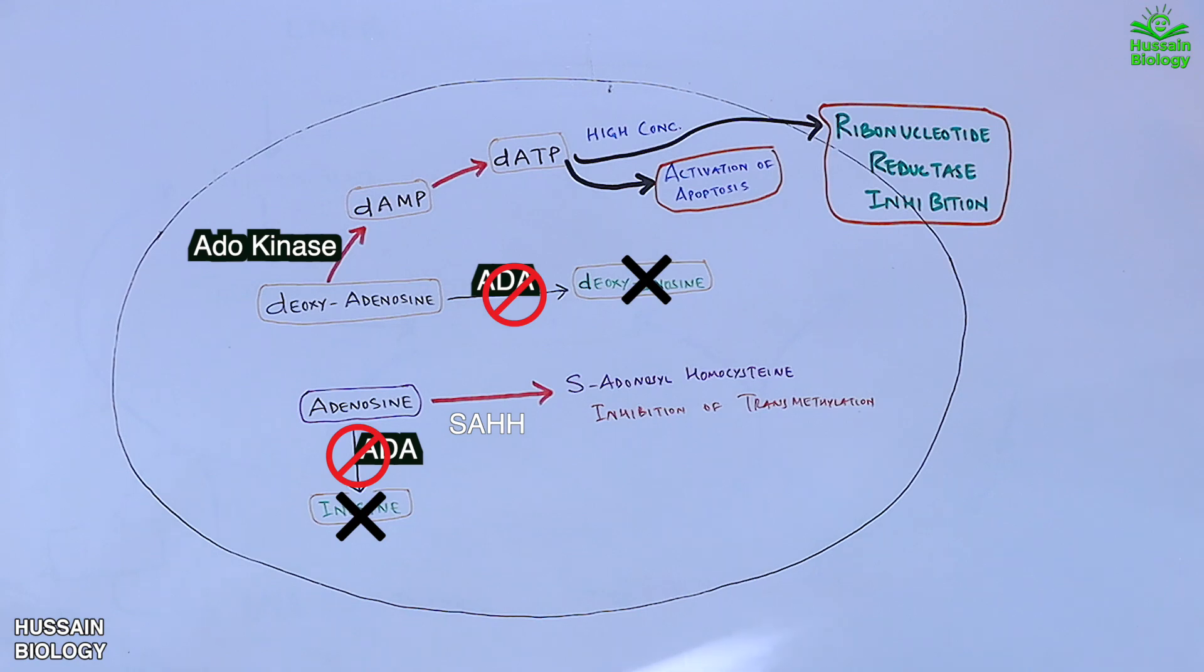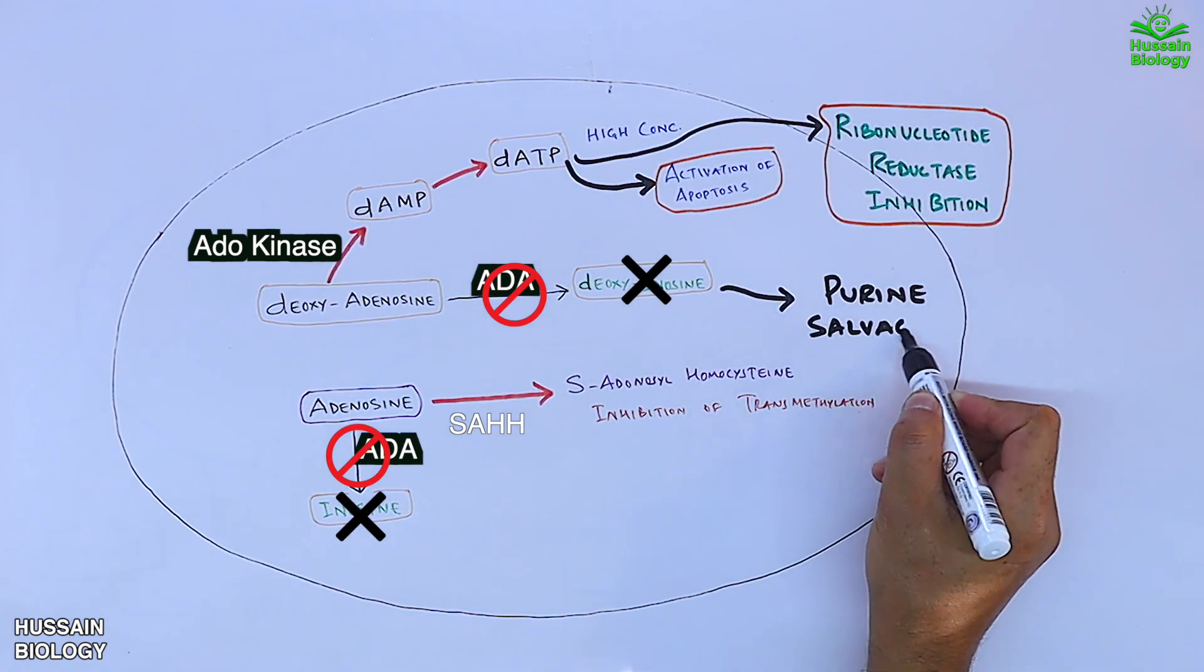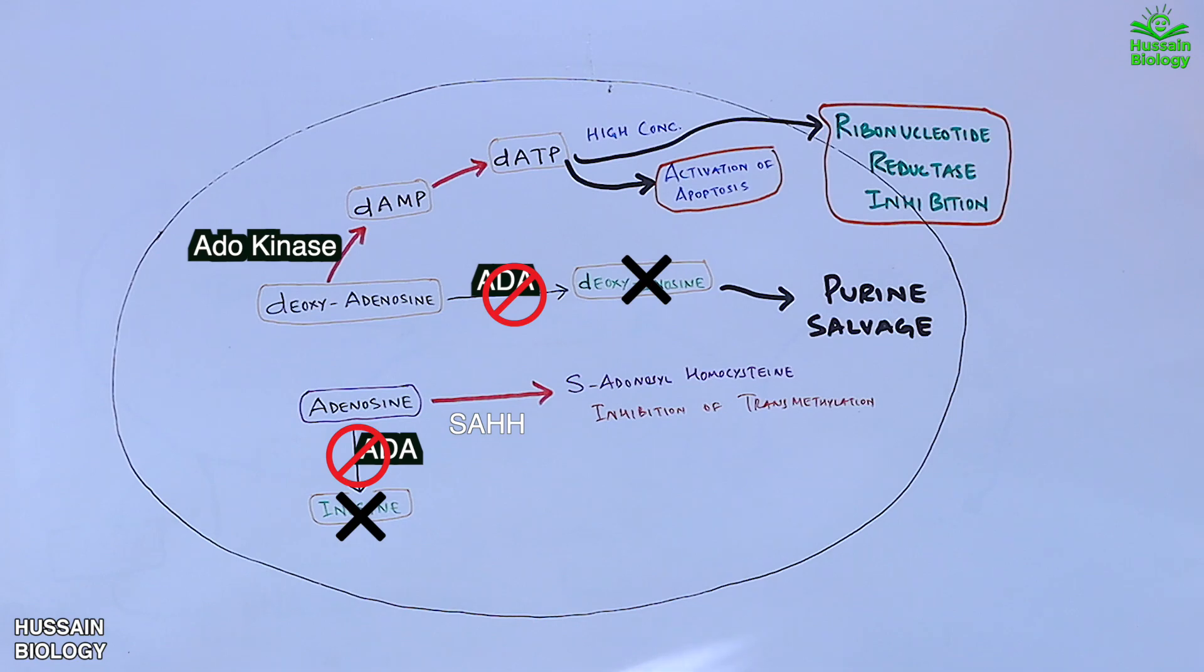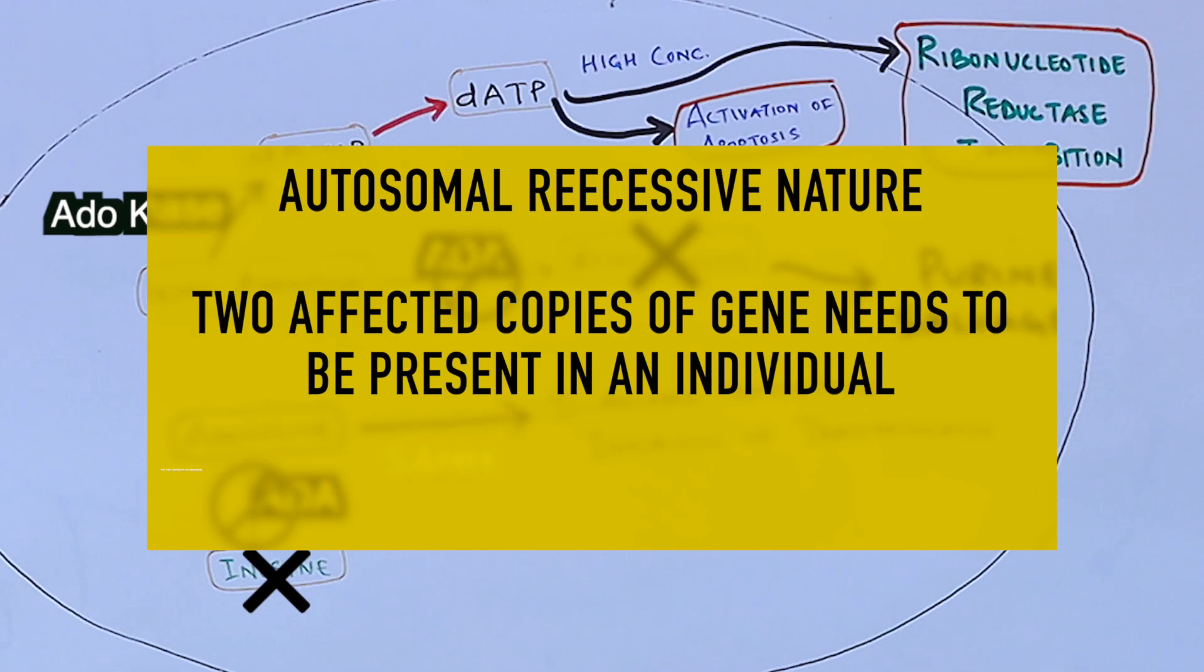Moreover, we see the purine salvage pathway is also affected when we do not get the deoxyinosine. And at last we see this disorder shows autosomal recessive nature, means for this disorder to occur the two copies of abnormal gene must be present in order for this disease or trait to develop.